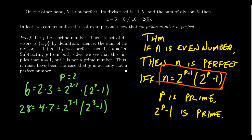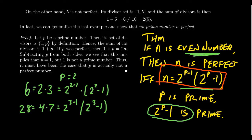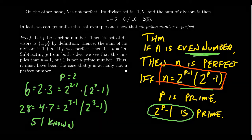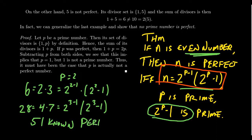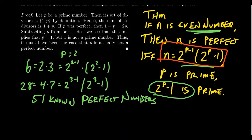Using Mersenne primes, we can actually construct perfect numbers. This dramatically simplifies the problem for even perfect numbers — the difficulty of finding them comes down to the difficulty of finding Mersenne primes, which is still a very difficult problem. It's unknown how many Mersenne primes there are. Currently there are only 51 known Mersenne primes, and as such, there are only 51 known perfect numbers. It is unknown whether the set of perfect numbers is infinite.